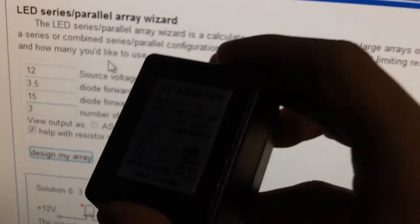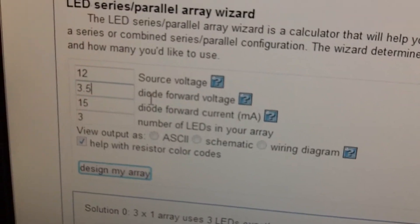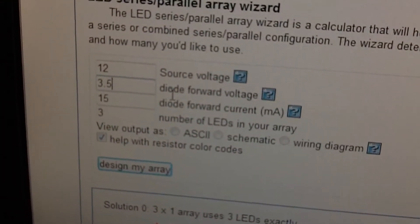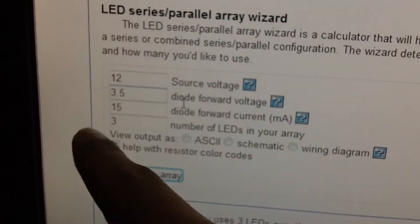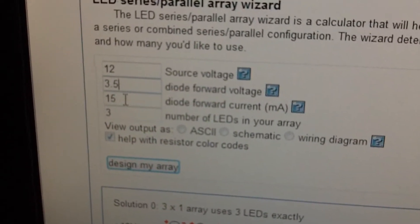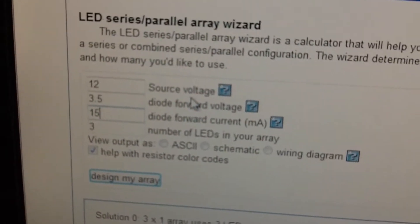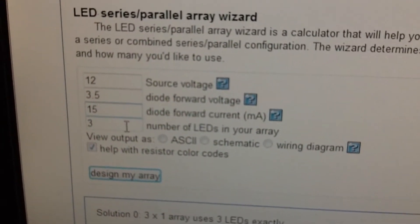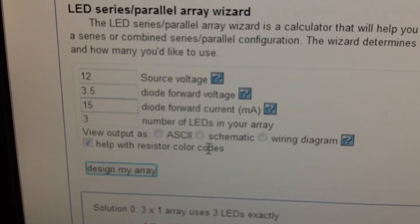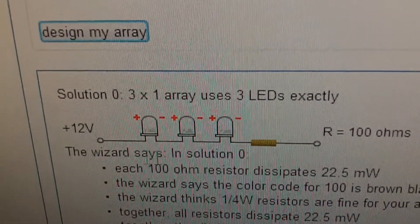The source voltage, that means this thing, whatever you're using for the power, the battery, the AC adapter, you put in that, which was 12 volts. And usually each 5mm LED is 3.5 volts. It could be less but that doesn't really matter, you could put 3.2. I put that in, and for the diode forward voltage, usually you don't want to go above 20 because they probably won't be able to handle that and it'll decrease the life of the LED a lot more. So around 10 to 15 is probably okay. And you want to check this, help with resistor color codes, and click design my array.